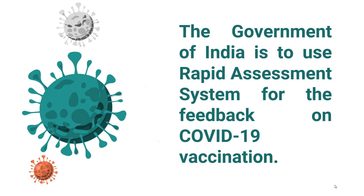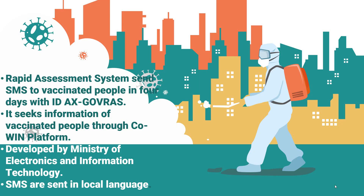The Rapid Assessment System sends SMS to people vaccinated within a span of four days. The SMS is sent with ID AX-GOV-RAS and asks citizens if social distancing was maintained at vaccination sites, and if information about adverse effects of vaccination was provided.